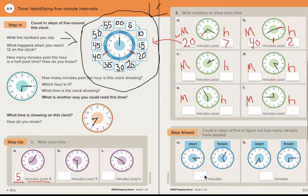Down here for the step ahead, it says count in steps of five to figure out how many minutes have passed. So this is what I would do if I were you. We see that the start time here is 15 minutes past four. Five, 10, 15. So we are starting right here on the three and I know it's past four. Now what I'm going to do is I'm going to check where I ended. So the minute hand ended way up here on the one.